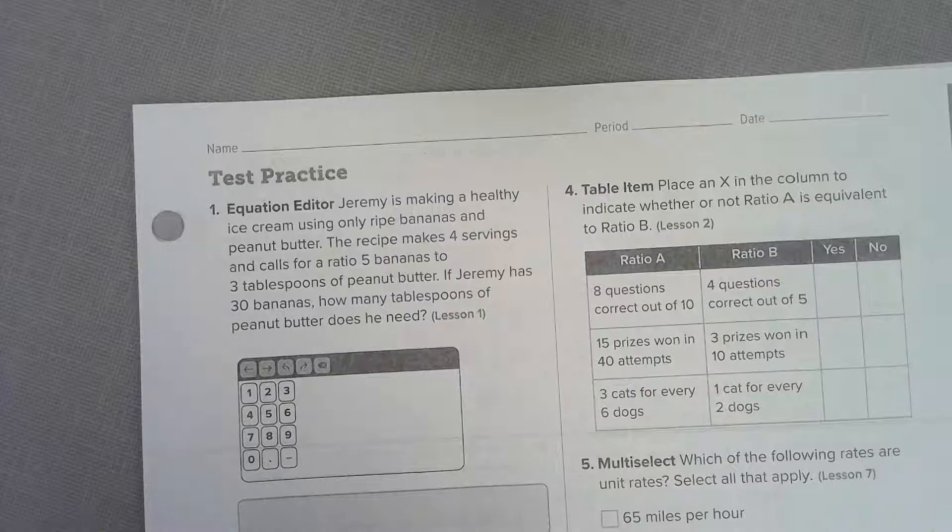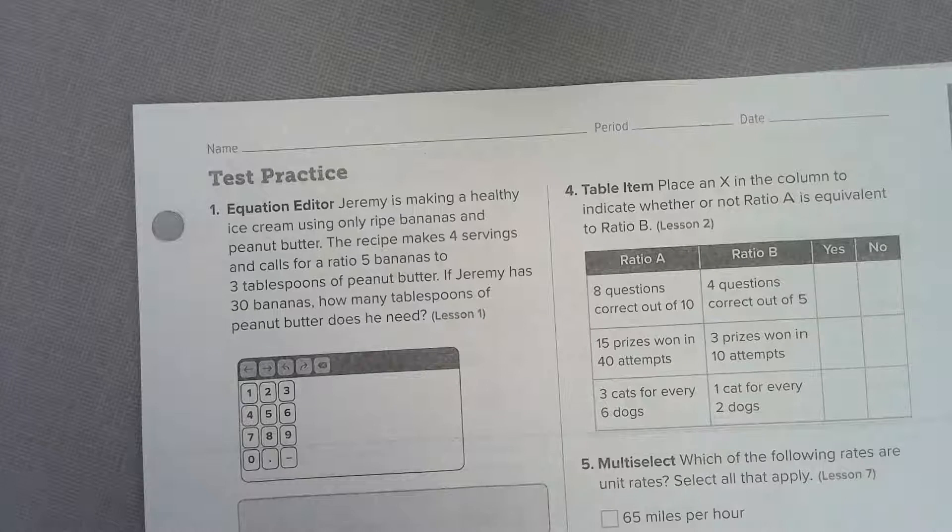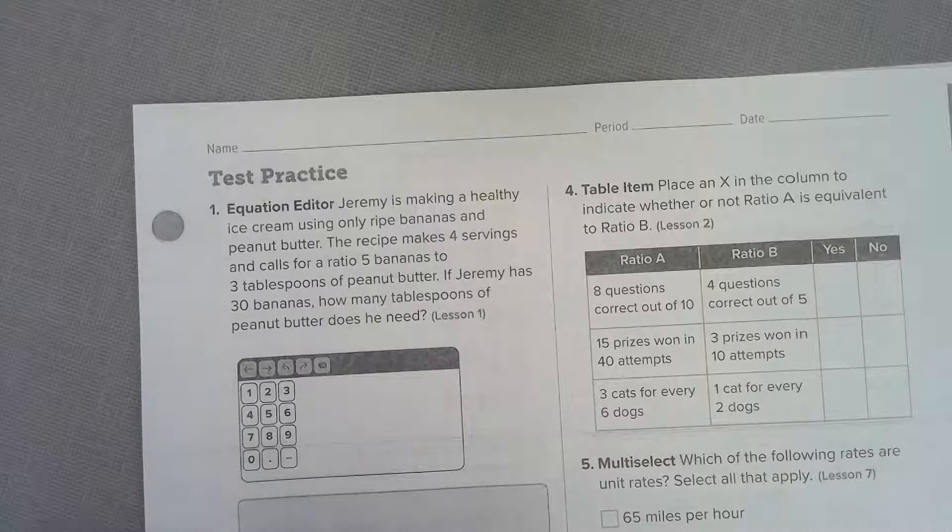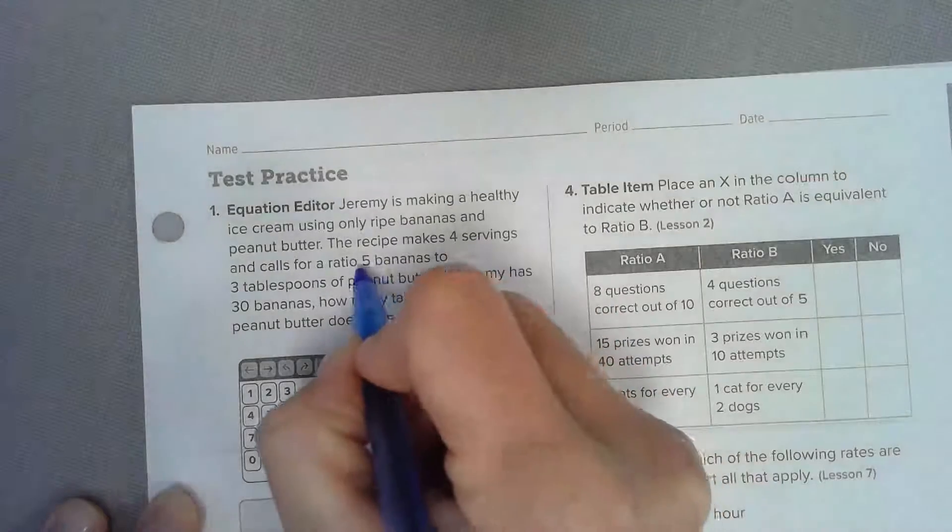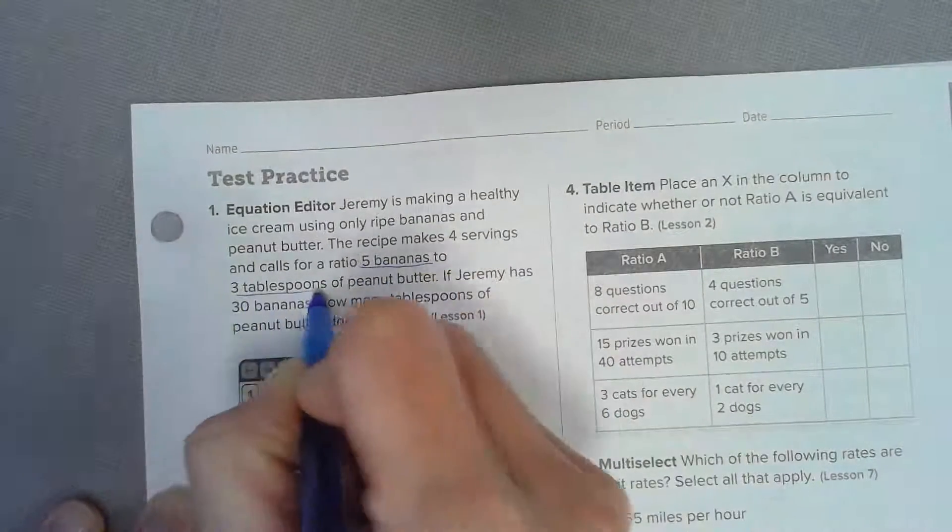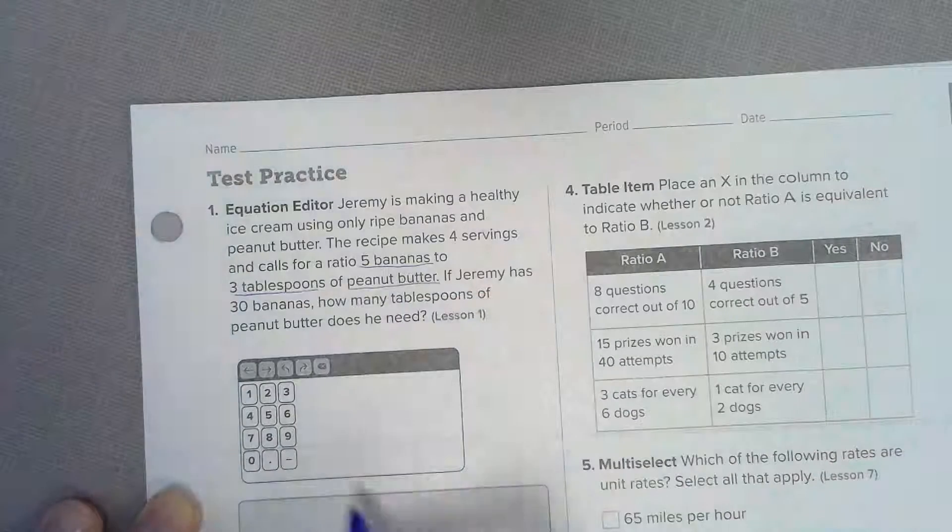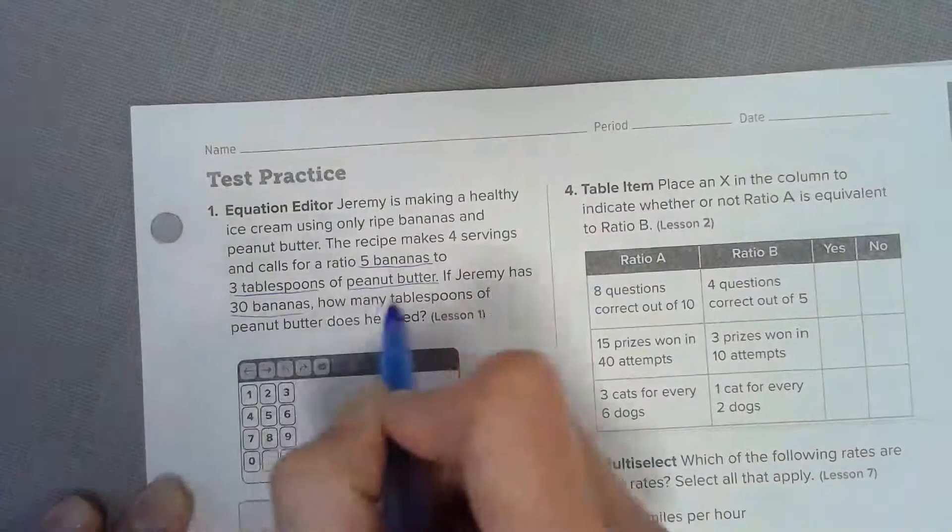Number one: Jeremy is making a healthy ice cream using only ripe bananas and peanut butter. The recipe makes four servings and calls for a ratio of five bananas to three tablespoons of peanut butter. If Jeremy has 30 bananas, how much peanut butter is he going to need?